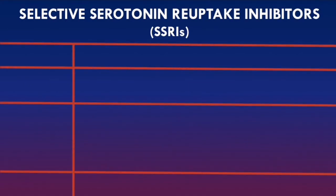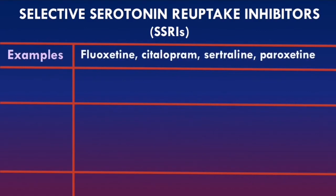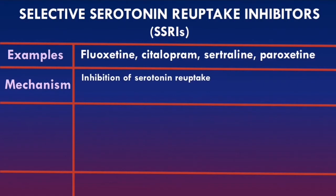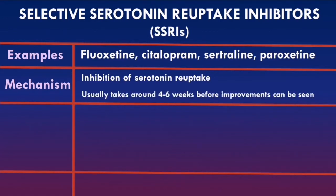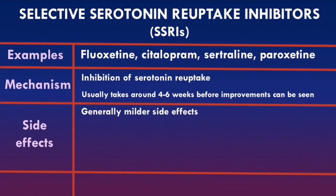Examples of SSRIs include fluoxetine, citalopram, sertraline, and paroxetine. Their mechanism is inhibiting serotonin reuptake into the presynaptic neuron, increasing serotonin availability within the synaptic cleft. It usually takes around four to six weeks before improvements are seen with SSRIs. SSRIs generally have milder side effects compared to other antidepressants, which is the main reason they are used first-line.